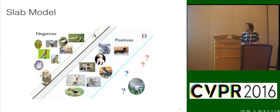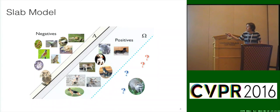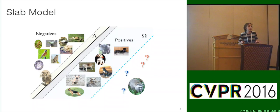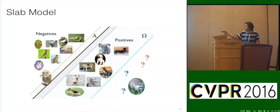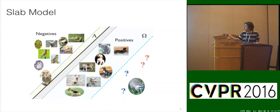Remember we had this problem of half spaces. The raccoon appears way out here in the positive territory of the model we trained — a linear SVM, say. Is there a way we can solve this? We kind of danced around this idea of a slab-based model to handle this.